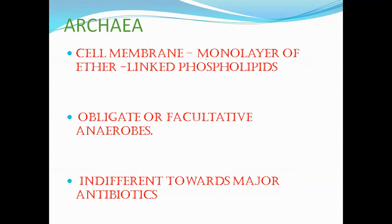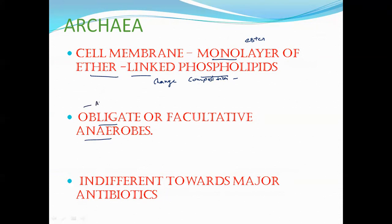The cell membrane is a monolayer and ether-linked phospholipids are found in it. Other bacteria and organisms have ester bonds, but archaea cell membrane has ether-linked phospholipids. This cell wall also changes composition — this is the unique quality of their cell membrane to survive in different conditions.